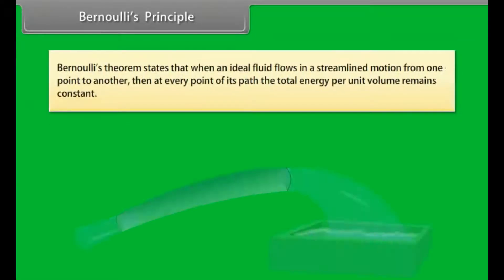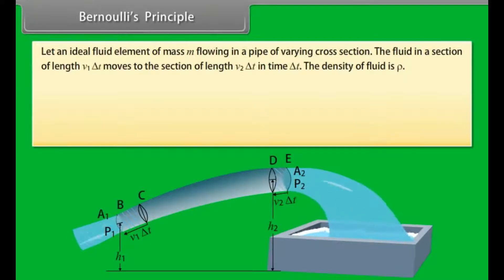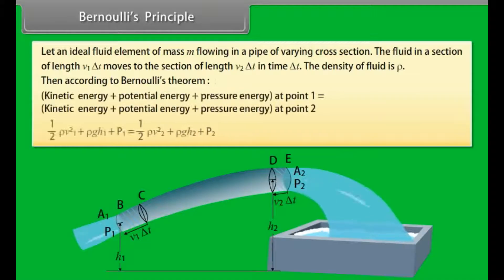Bernoulli's Principle. Bernoulli's theorem states that when an ideal fluid flows in a streamlined motion from one point to another, then at every point of its path the total energy per unit volume remains constant. Let an ideal fluid element of mass M flowing in a pipe of varying cross section. The fluid in a section of length V₁Δt moves to the section of length V₂Δt in time Δt. The density of fluid is ρ. Then, according to Bernoulli's theorem, sum of kinetic energy, potential energy and pressure energy at point 1 equals sum of kinetic energy, potential energy and pressure energy at point 2.